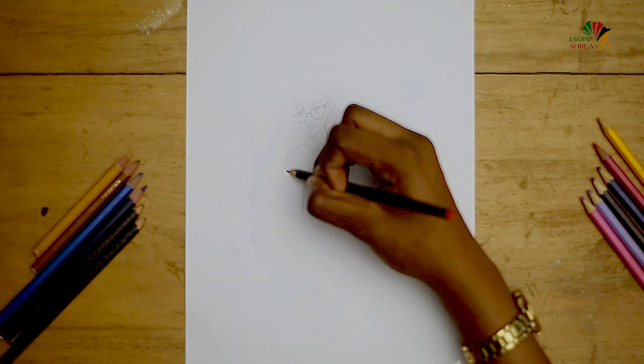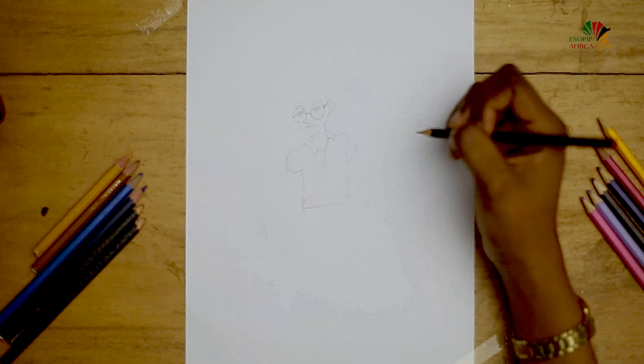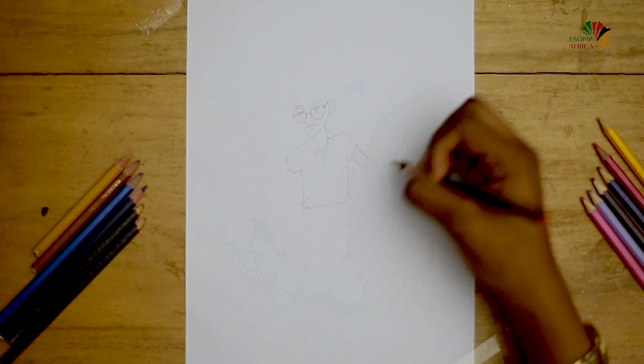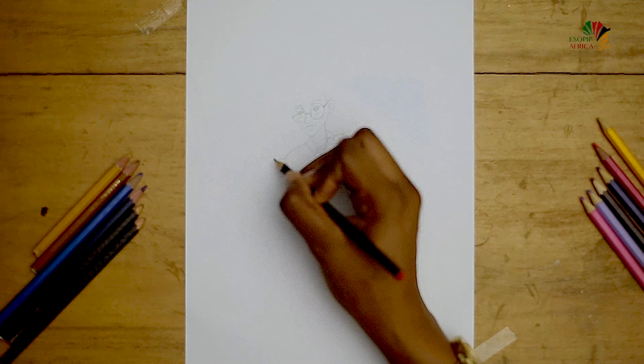You can draw lines like this to indicate wrinkles on her shirt. Now let's go to her arms. One arm will be facing like this. We would use lines and curvy lines to do that. Let's do the other one before we make her fingers.